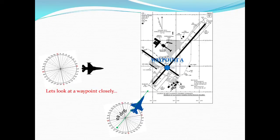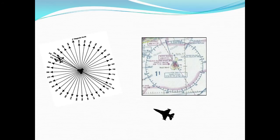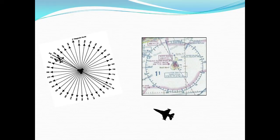Now let's take a look at what a waypoint looks like, and more specifically in this case a VOR. A VOR is a station that transmits on every single degree. There is a representation of every 10 degrees where a radial is transmitted, and zero degrees is a reference, but there's also a radial at every degree. The sole purpose of the VOR system and the radials is to provide the pilot with a reference as to exactly where he is in reference to the VOR station.